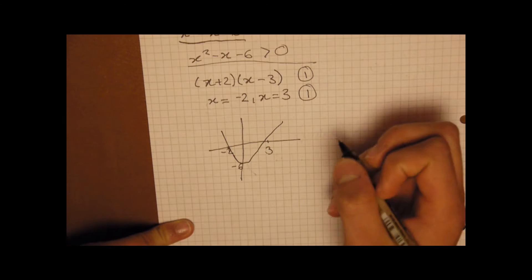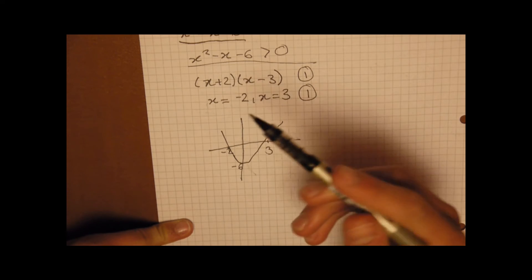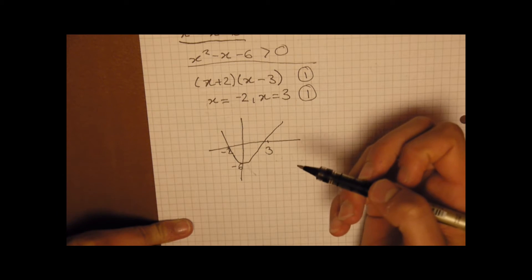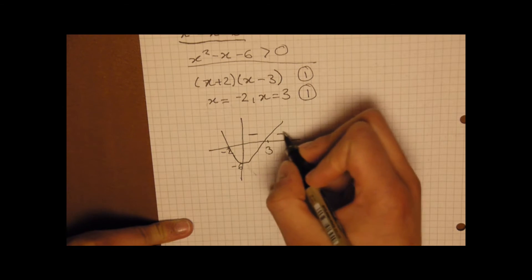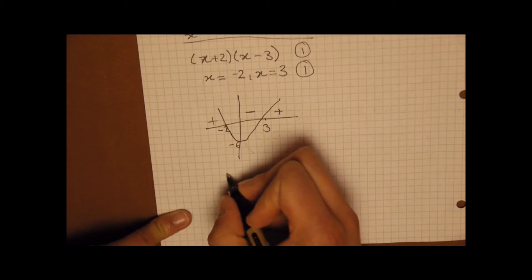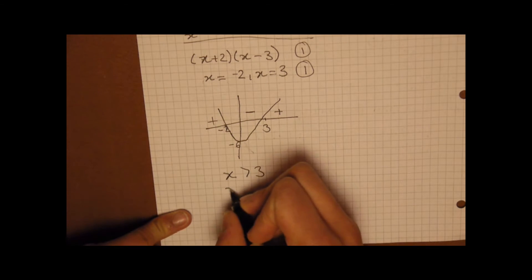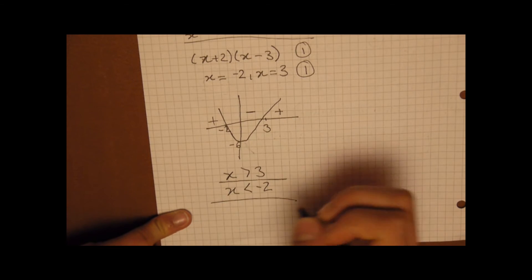Minus 6. So now all we've got to do is work out, effectively, where this is bigger than 0. So where this is bigger than 0. Now, it's not here. It's out here. Now, in order to solve the equation, what we need to say is we need to say that x is greater than 3 and x must be less than minus 2. So it's got to be two separate inequalities.